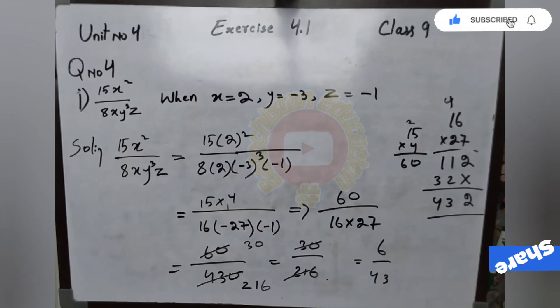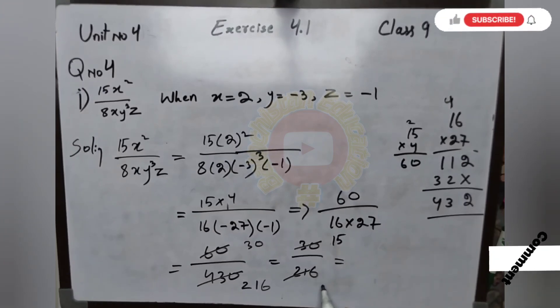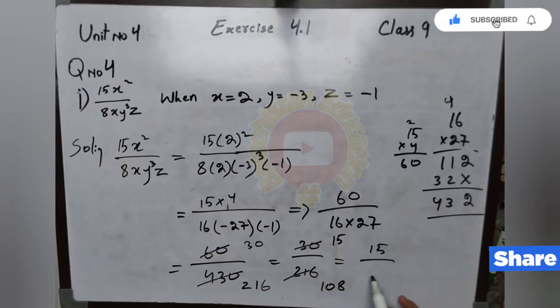60 upon 30. These can be cut. We can cut by 2: 2 times 3 is 6, 2 times 2 is 4, 2 times 1 is 2, 2 times 5 is 10. Now these can be cut by 5: 5 times 6 is 30.